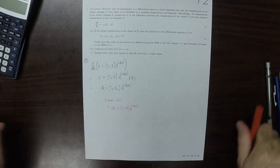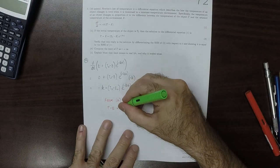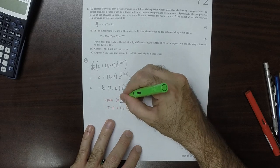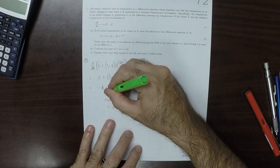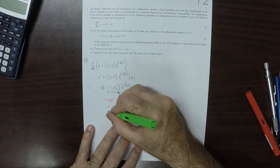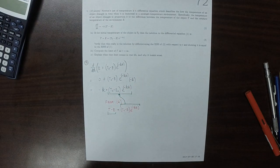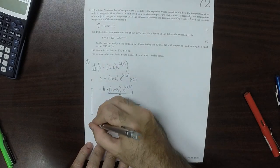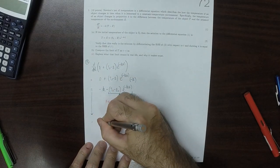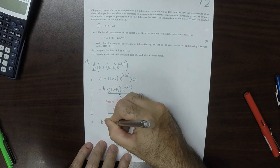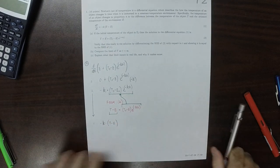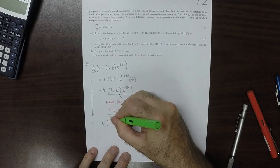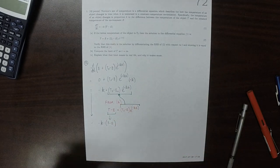So I can take this, which is the same as that, and replace it with this, t minus e. So we get negative k multiplied by t minus e, which, as advertised, is the right-hand side of equation 1.